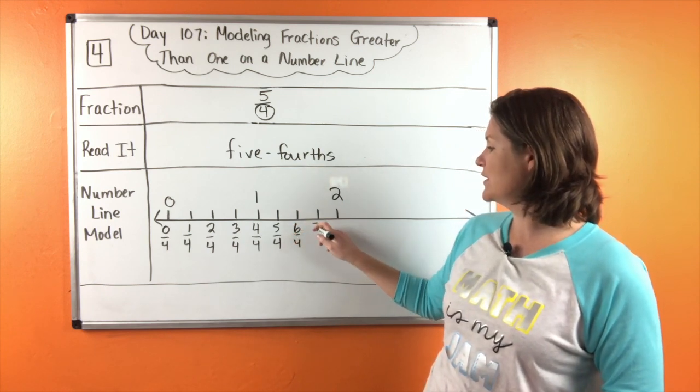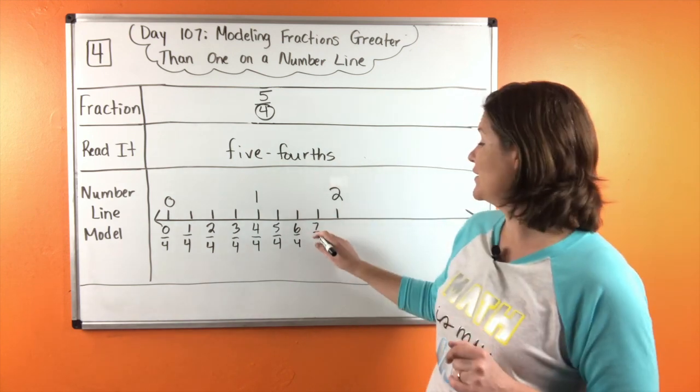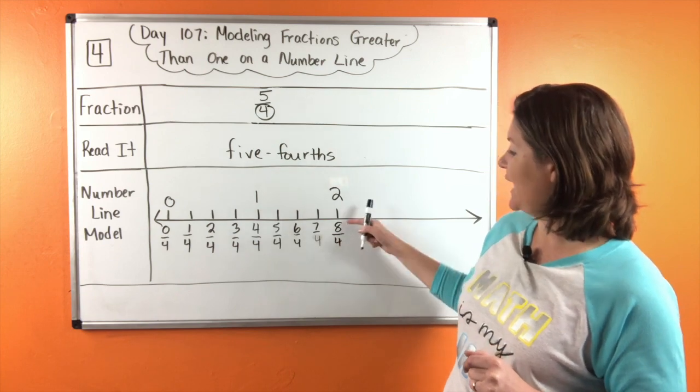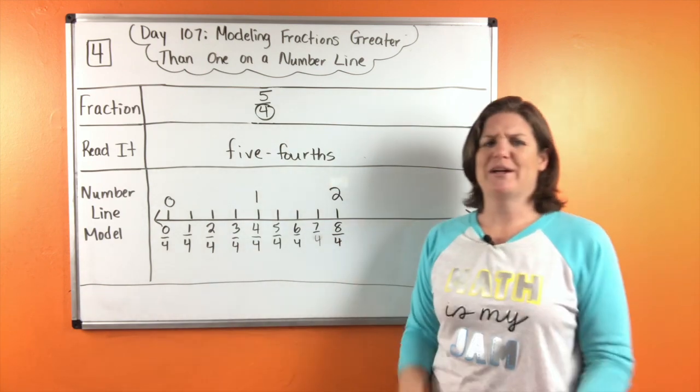Six fourths, seven, oops, I almost wrote eighths, seven fourths, and eight fourths, which is kind of like eight divided by four, which does equal two. And now what do I need to do?